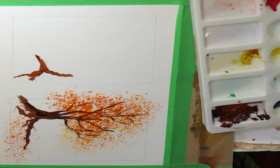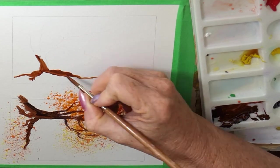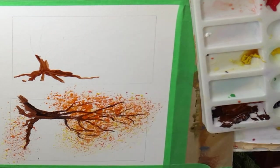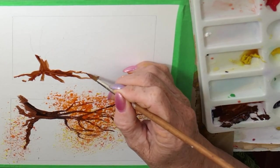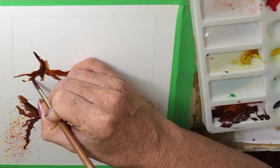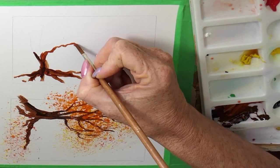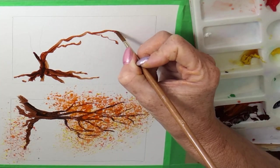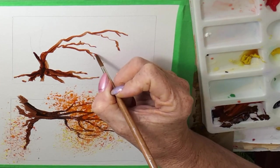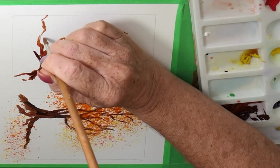I'm just going to change my brush because that one's a little bit big for that picture. So I'm using a number six round brush. This tree trunk is going to be a very wriggly one.